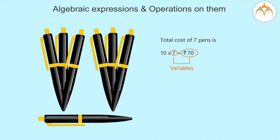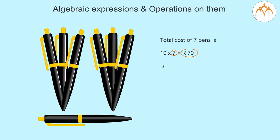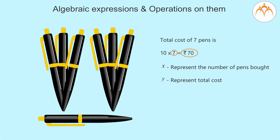Different numbers can take their place — they are called variables. So in this formula, the number of pens bought and the total cost are two variables. Just like we use a short nickname for a friend whose name is too long, if we use X to represent the number of pens bought and Y to represent total cost, then we can write the formula as: Y = 10 into X, or Y = 10X.